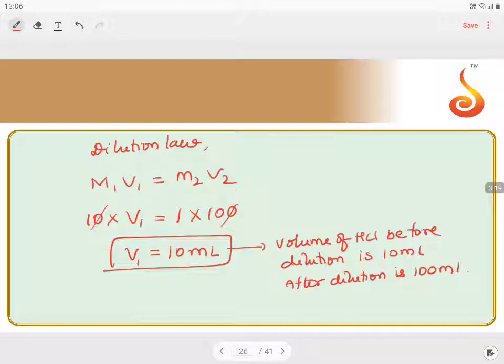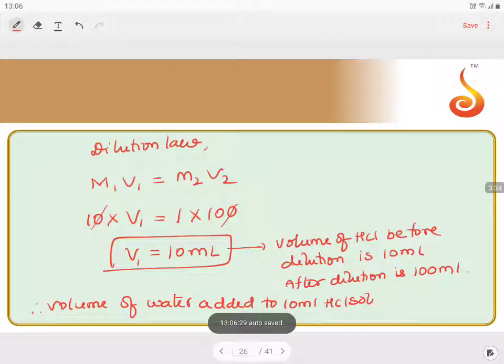So what is the volume of water added? Volume of water added to 10 mL HCl solution equals 90 mL.